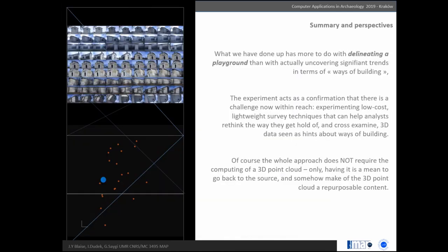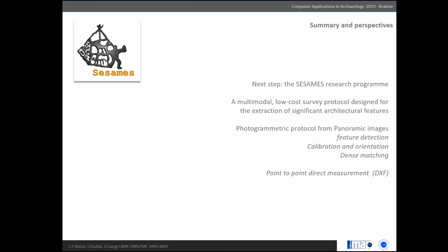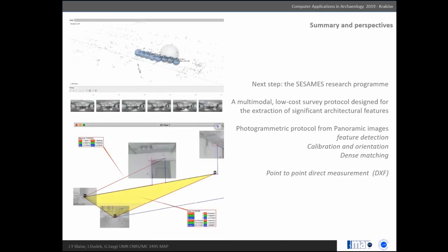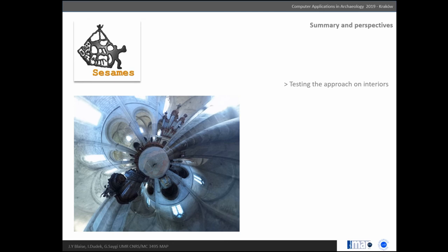To conclude: what we have done up to now is only delineating the playground. We don't say we've uncovered significant things in ways of building, but it does show there's a line of research ahead using low-cost survey protocols when you want to address issues related to minor heritage where you don't have the money or accessibility to use large-scale instruments. The perspective of this research is a new research program using a multi-modal protocol with both parametric photogrammetry and point-to-point measurement to see what we can gain in understanding the interior of these edifices. Thank you.